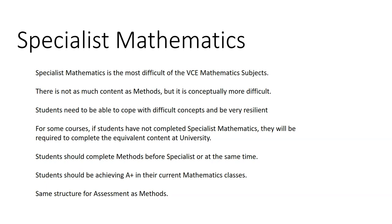For some courses, if students haven't completed Specialist Maths, they'll be required to complete the equivalent content at university. Students should complete Methods before Specialist or at the same time. Students should be achieving A or A+ in their current maths class. It has the same assessment structure as Math Methods at Unit 3 and 4 level.